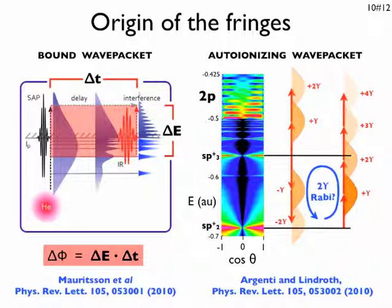The fringes that we observe are explained in the same way. In the 2p channel, for example, the direct ionization amplitude has even parity. This amplitude interferes with the odd one photon and the even two photon above threshold ionization amplitudes of the sp3 plus doubly excited state.